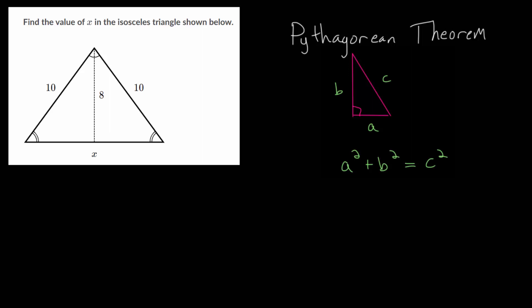Let's look at another example problem where we have an isosceles triangle and we want to use the Pythagorean theorem to find a missing side length.